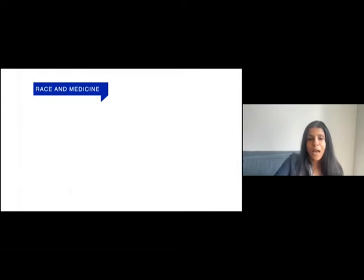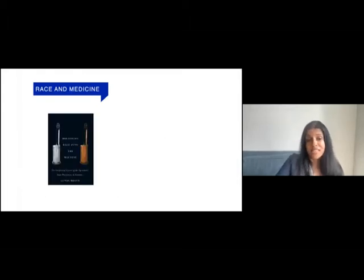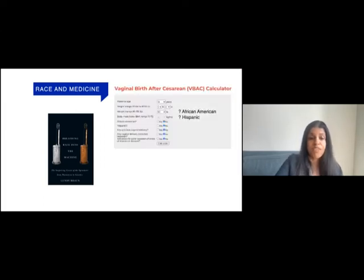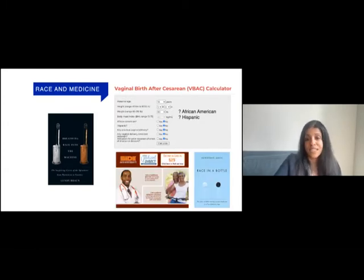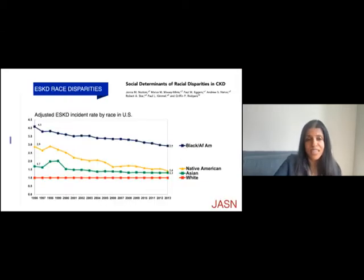Nephrology is not the only practice in medicine which has embedded race in a problematic way. Associations with racist ideas about Black individuals' lung capacity that hearken back to slavery were embedded into pulmonary function testing. The VBAC and BiDil are other examples of race-based practices.